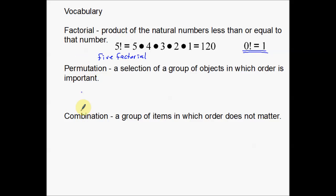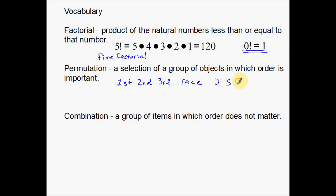Permutation: the difference between permutation and combination breaks down to this. A permutation is a selection of a group of objects in which order is important. This would be something like 1st, 2nd, or 3rd place in a race. Order is definitely important because if Johnny got 1st, Sam got 2nd, and Phil got 3rd, that's different from Phil getting 1st, Johnny 2nd, and Sam 3rd. Those are two different events, and permutations takes that into account.